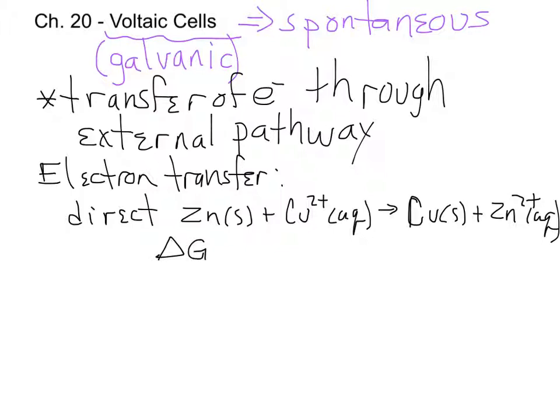The sign of the delta G for that reaction would have been negative — in fact, it's negative 213 kilojoules. That's an example of a direct electron transfer, because the zinc metal was directly in contact with the copper ions in solution, and so the electrons were going directly from the zinc metal to the copper ions.